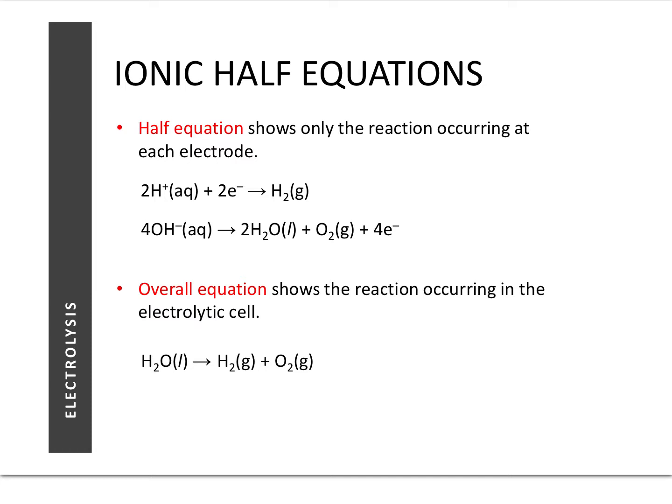Bear in mind from redox that oxidation and reduction always occur together — there's no reaction where something is oxidized but nothing is reduced. So when we write a half equation, the first one represents reduction and the second represents oxidation; this is not a full equation, it only shows half the reaction. When we combine these two half equations we get the overall equation, which tells us what is actually going on — for example, water being reduced to H₂ and water being oxidized to O₂.